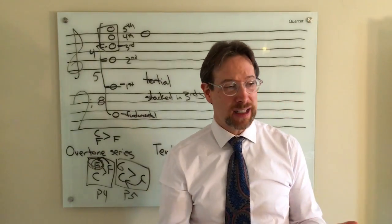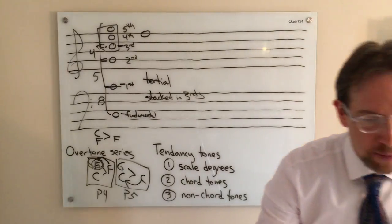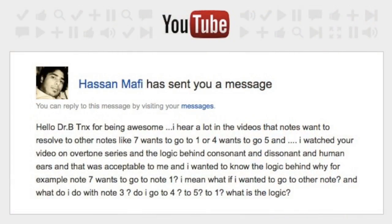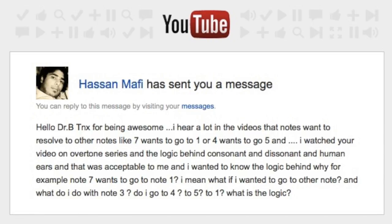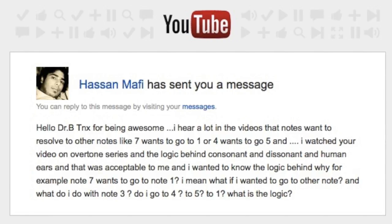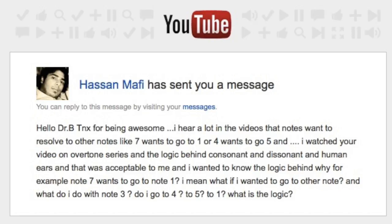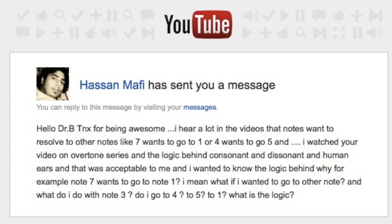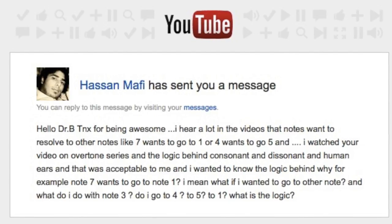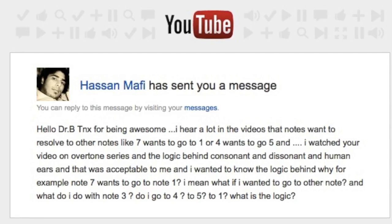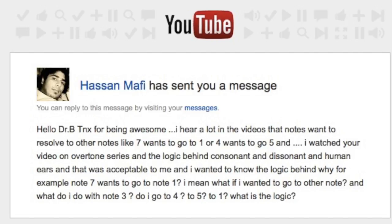Now I have a second question that's somewhat related. So let me go to Hassan Mafi, and he wrote, Dr. B, thanks for being awesome. I hear a lot in the videos that notes want to resolve to other notes, like seven wants to go to one or four wants to go to five. And I watched your video on overtone series, which we're reviewing for everyone and the logic behind consonant and dissonant and human ears. And I wanted to know the logic behind why, for example, note seven wants to go to note one. I mean, what if I wanted to go to other note? And what do I do with note three?